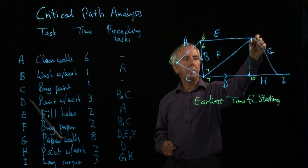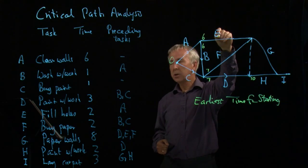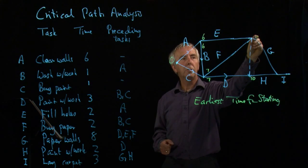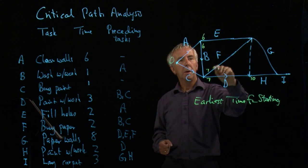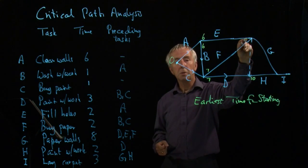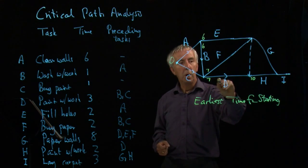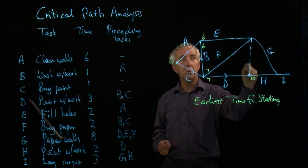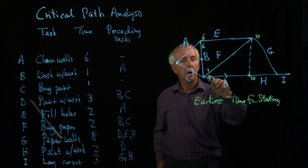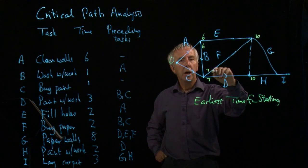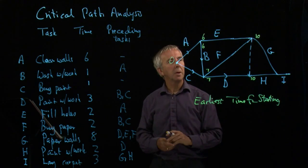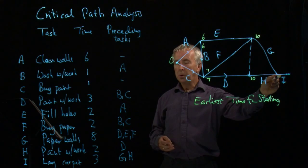What about G? Well, E takes two, and it could start at six, so I could start this one at eight. F could start at seven, and takes two, so that won't be finished until nine hours. But even worse, D isn't finished until ten. That's the latest one, so that's the earliest I can start G. I've got to wait for D, E, and F, and the one that takes the longest is to finish D. So they're both ten.